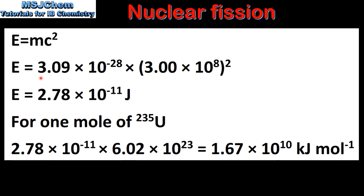Next we will use the equation E equals MC squared to calculate the energy released in the fission reaction. We multiply our mass defect in kilograms by the speed of light squared, which gives us 2.78 times 10 to the negative 11 joules. This is the energy released during the fission of one atom of uranium-235.